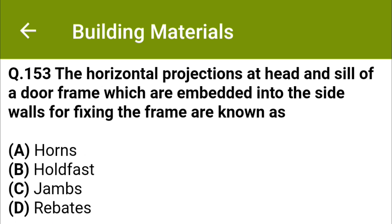The horizontal projection at head and sill of the door frame which are embedded into the side walls for fixing the frame are known as: option A horns, option B hold fast, option C jambs, option D rebates. The correct answer is option A: horns.